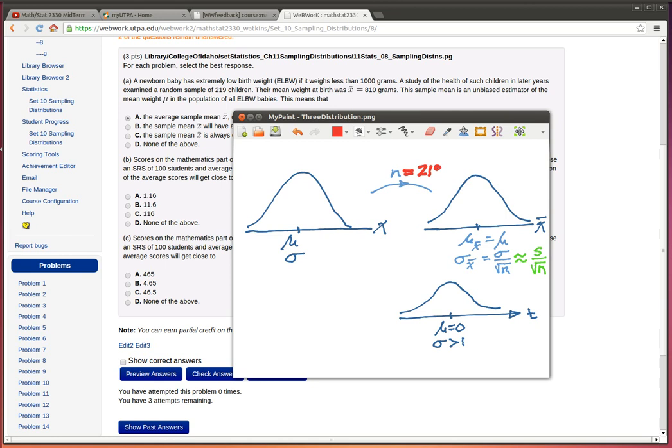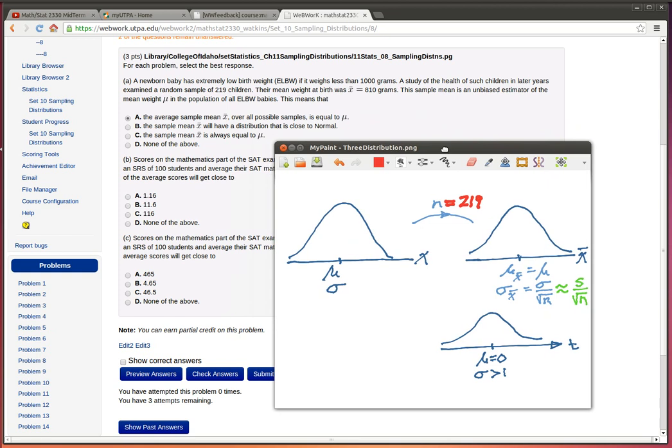Now we only look at one sample, but in this picture we're imagining suppose that you looked at all the possible simple random samples of 219 and would worry about what that distribution is. Now here's what they're asking: the average sample mean x-bar, so we took a sample of 219, we find the x-bar over all possible samples is equal to mu. Okay, that is the mean of all the samples. That's this statement right here, that is a true statement.